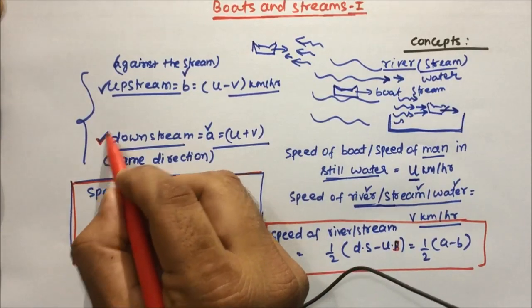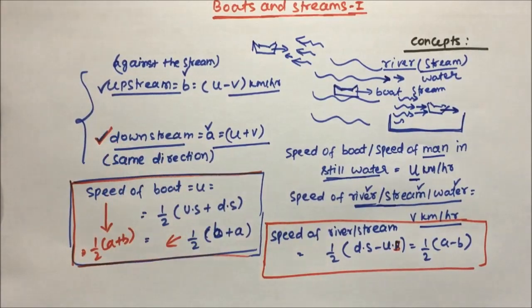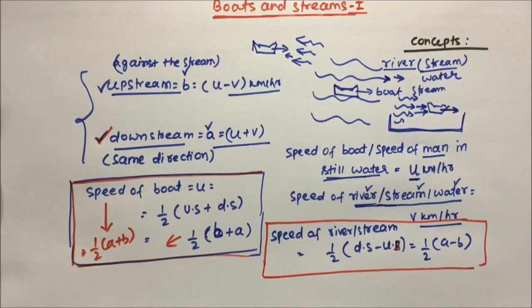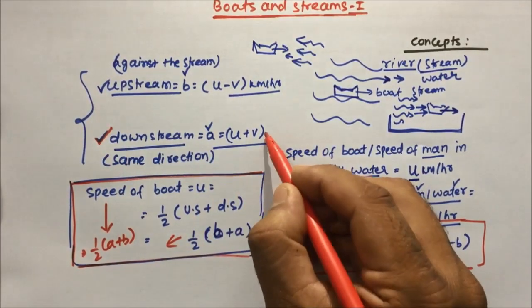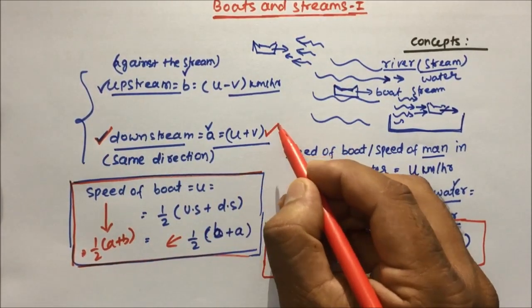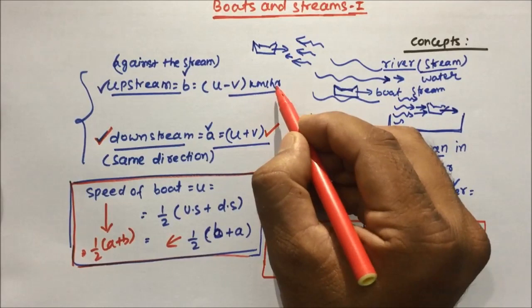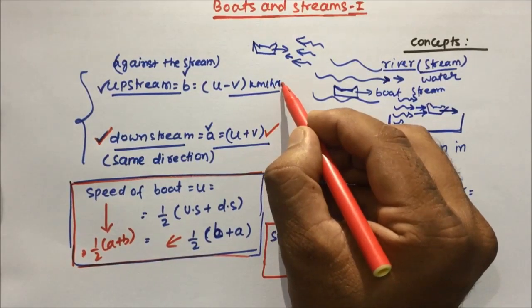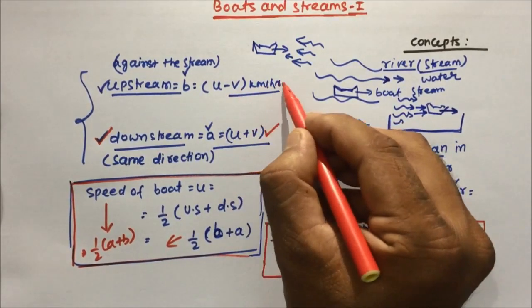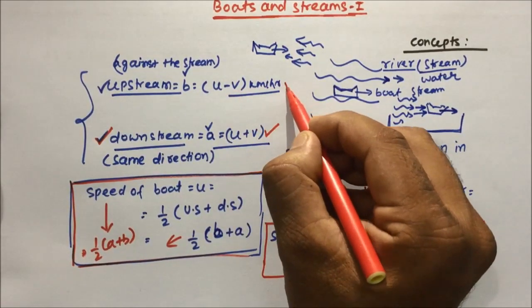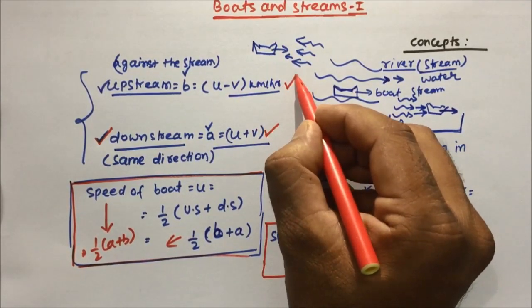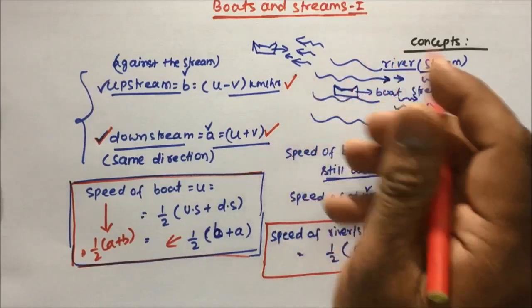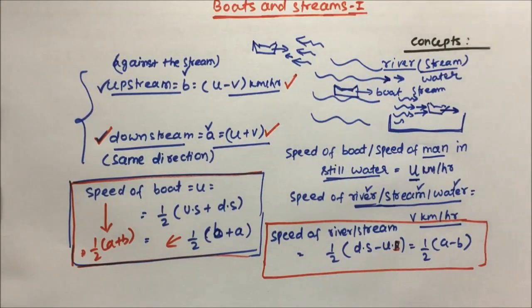To summarize: downstream speed means both moving in the same direction, so speed adds to U plus V. Upstream speed means both moving in opposite directions, so speed is U minus V km per hour. Now let's solve a question.